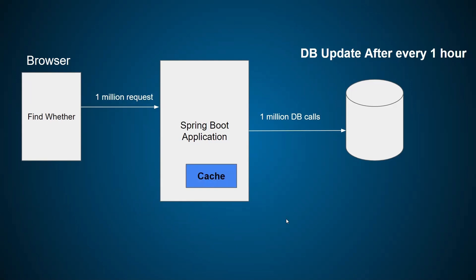So how to avoid this problem? For this we can use a cache. When we use the cache, when the application starts and the first request comes in, the cache will trigger, go to the database, and fetch all the information for one hour. It will return to the end users. For whatever requests come — whether one million or ten million — the Spring Boot application will not hit the database. Instead, it will read the data from the cache, and in this way it improves the performance of the application.